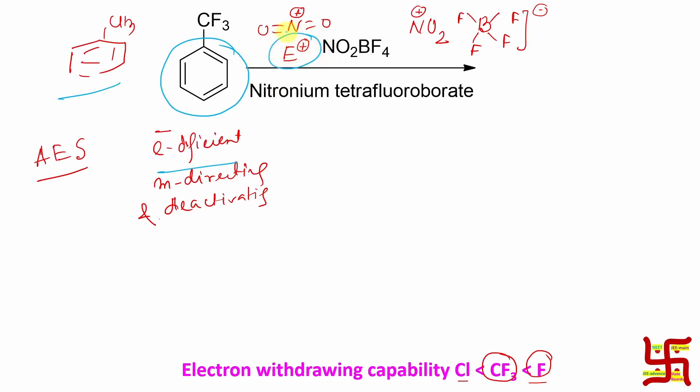That's why the reaction will happen. Now question: where is the reaction expected to happen? Obviously meta, because it's meta-directing. So first of all, the aromatic electrophilic substitution product is actually meta, so this is actually nitration on the meta position: meta-nitro trifluoromethyl. This is the thing.